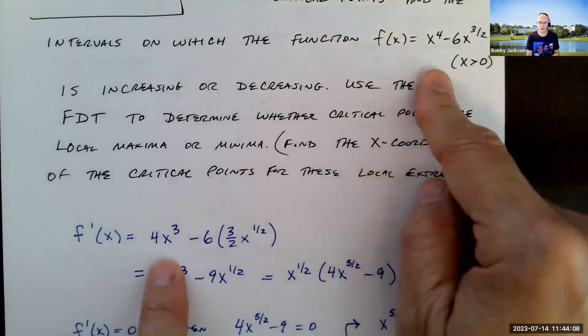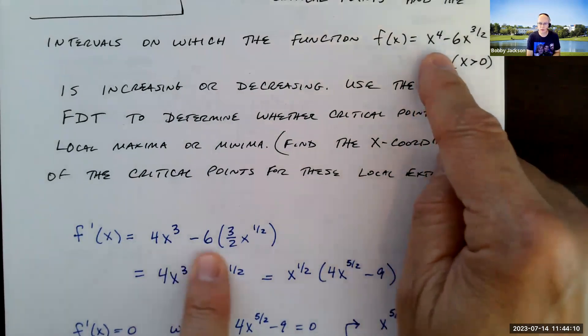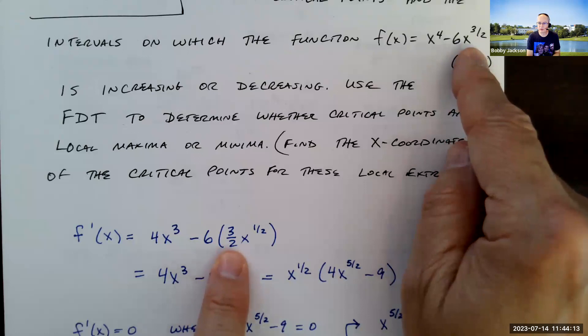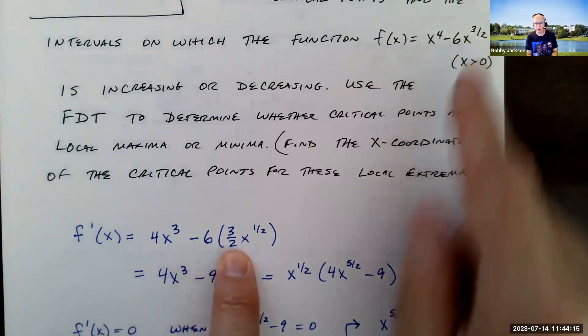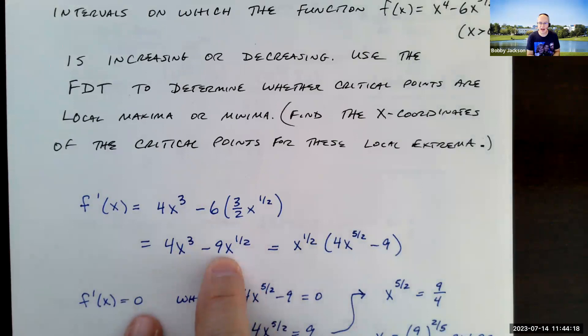So we find the derivative. First of all, the derivative of x to the fourth is 4x cubed. Pull the six out, x to the three halves by the power rule is three halves x to the one half. Six times three halves is nine.